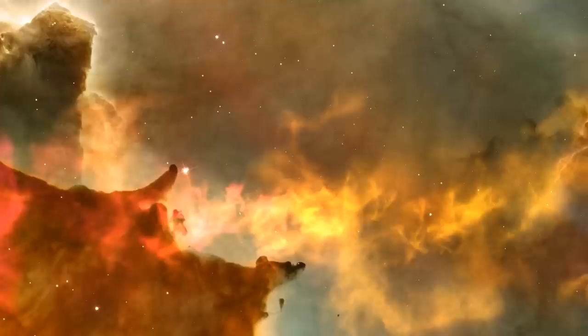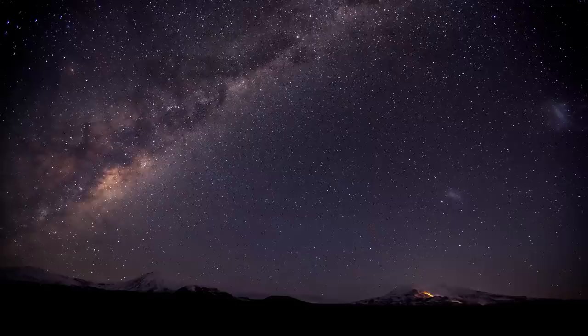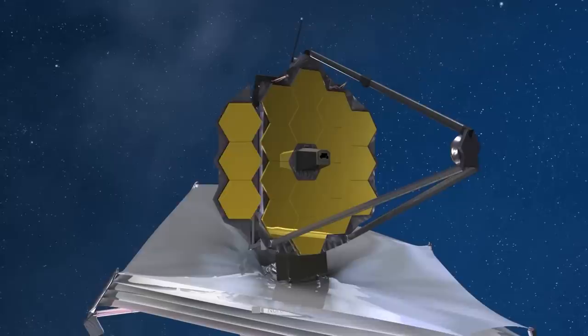Webb's Miri spectrometer presents us with the structures that form in the process, reminiscent of stellar annual rings in a previously unattained level of detail. Accordingly, telescopes of the past were only capable of capturing a maximum of two dust rings. On the Webb image, on the other hand, we can see a whole 17 of these fascinating structures.